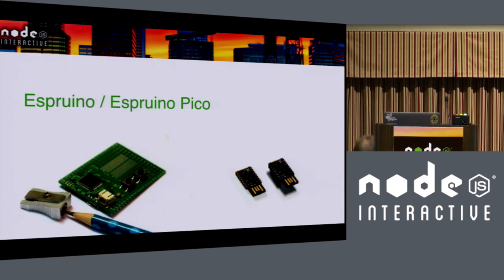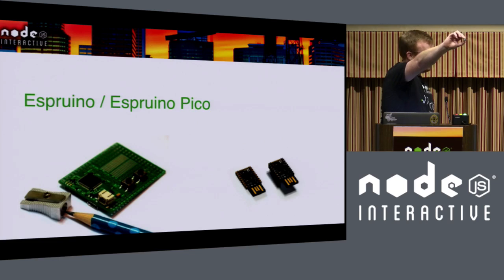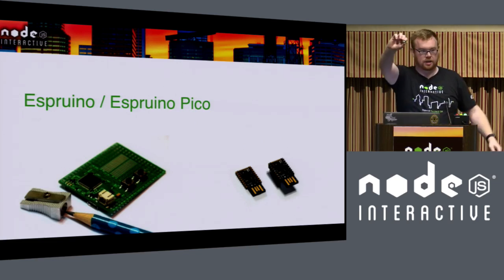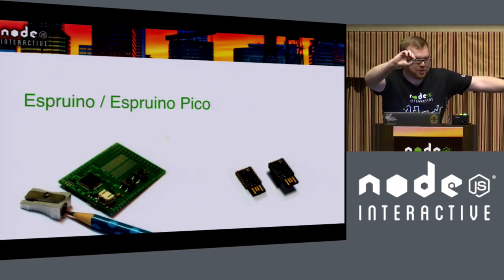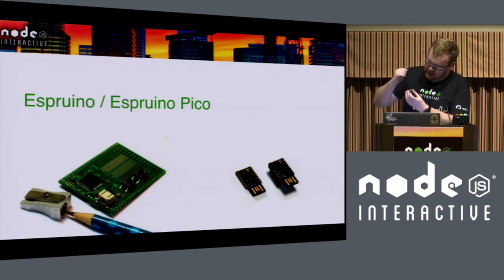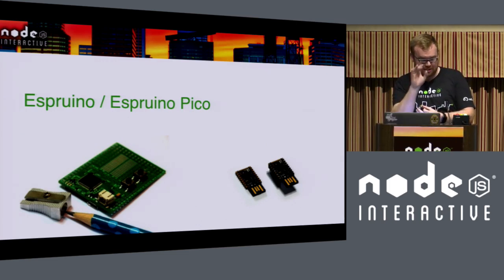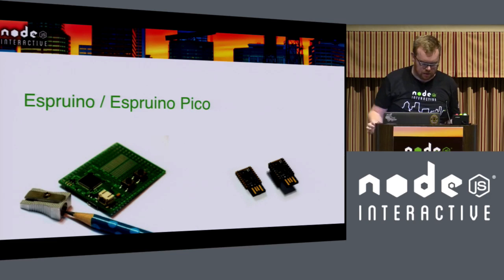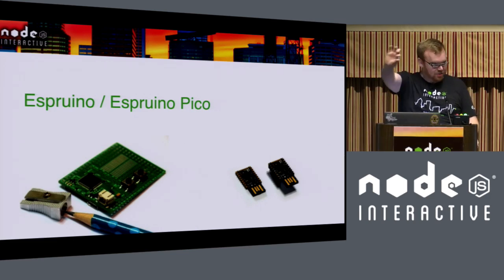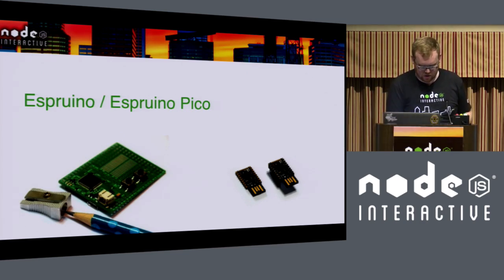This is the Espruino Pico. It has a tiny JavaScript interpreter running on this chip — written in C, but you can type into it like a REPL. This was Kickstarted and I was the first backer on this. I've got a project to show you using this Espruino today, so it should be fun.